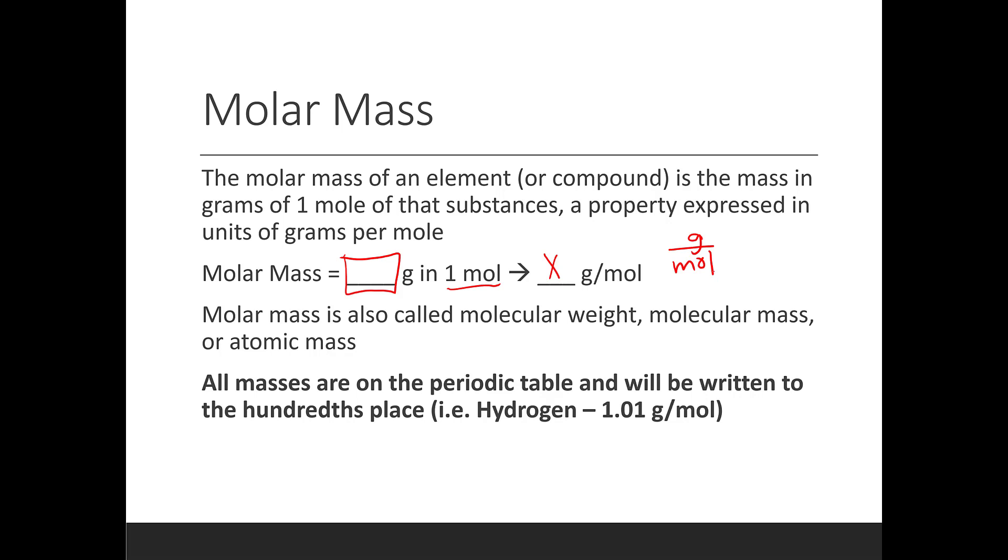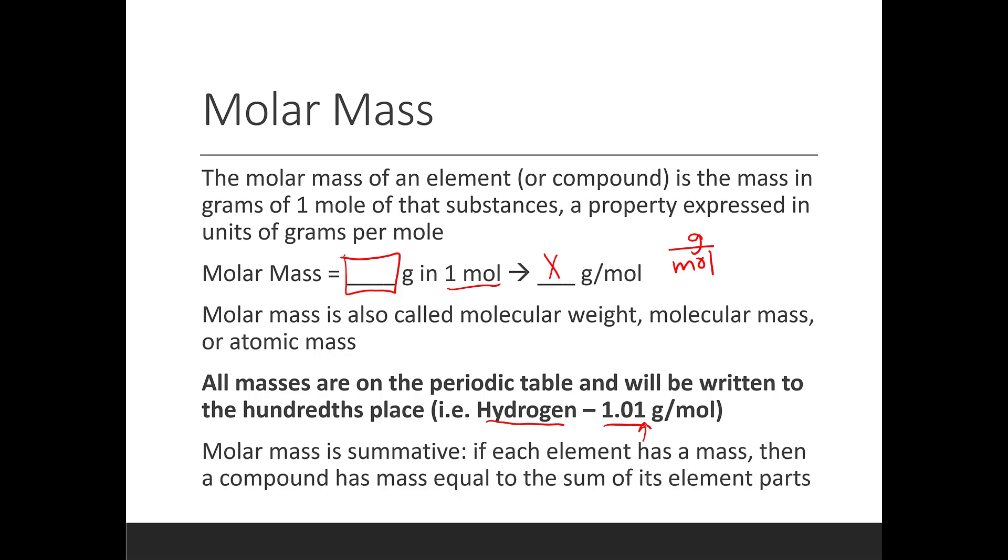The masses listed on the periodic table are the elements molar masses. So for example, hydrogen, hydrogen's molar mass is 1.01 grams per mole. That's how many grams are in one mole of hydrogen. And usually we're going to write this to the hundredths place, meaning that second decimal place. Your periodic table, if it's the one that I provided for you, should already have that rounded. If you're using a different resource or you have an app or website that you've been using, make sure that you round your molar masses to the hundredths place. And then molar mass is summative, meaning if each element has a mass, then if we have a compound, the mass of the compound is equal to the sum of all of the masses that make up that compound.